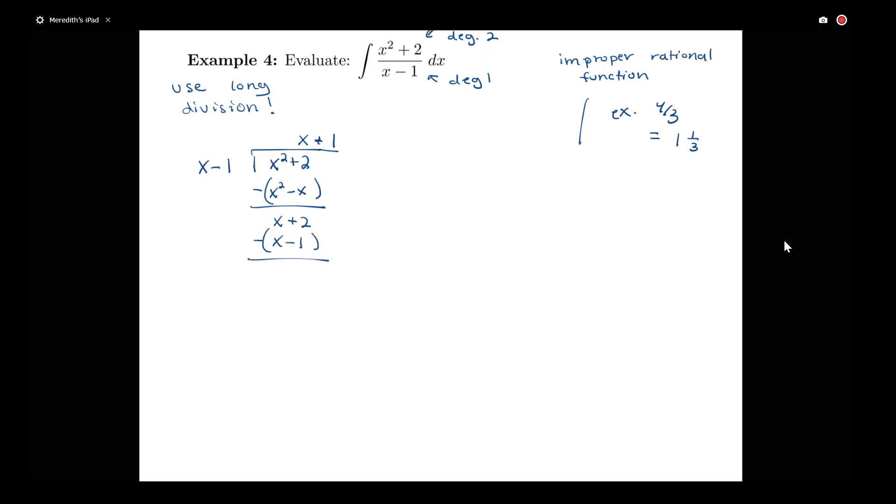I'm subtracting that through, so I have x minus x, no x terms left. 2 minus a negative 1 is going to give me this remainder of 3. So what this shows me is that x squared plus 2 divided by x minus 1 is equal to x plus 1 plus 3 divided by x minus 1.